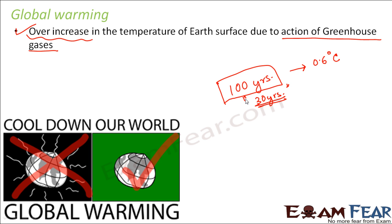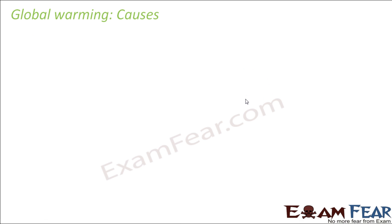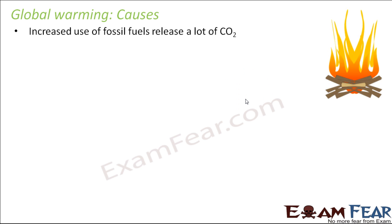If the temperature keeps on increasing like this, living organisms will not be able to survive. So what are the causes of global warming? The first cause is the increased use of fossil fuels, because burning fossil fuels releases a lot of carbon dioxide. The more carbon dioxide there is, the more infrared radiation is absorbed, and the temperature increases.